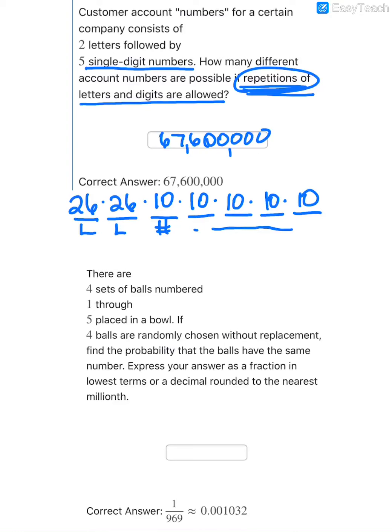The second question talks about there being four sets of balls. They are numbered 1 through 5. So 1, 2, 3, 4, 5. So then there's another set: 1, 2, 3, 4, 5, and so on. So four sets like that.